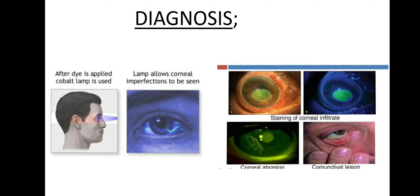Another clinical manifestation is the sensation of something in the eye. How to make a diagnosis: first, a history of trauma and use of contact lenses will lead to this condition. History of contact lens use and vigorous rubbing of the eyes is important.